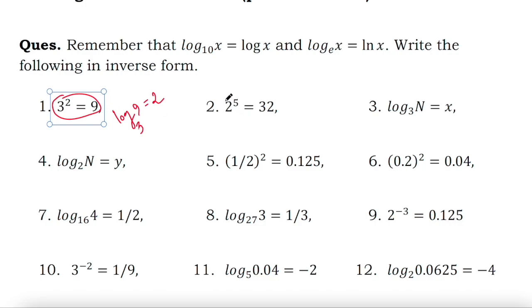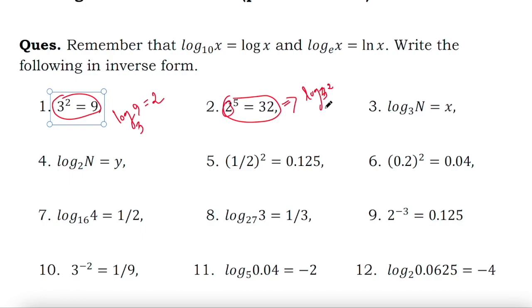And this one is given in exponential form, so the corresponding inverse form will be: log 32 to the base 2 equals 5.